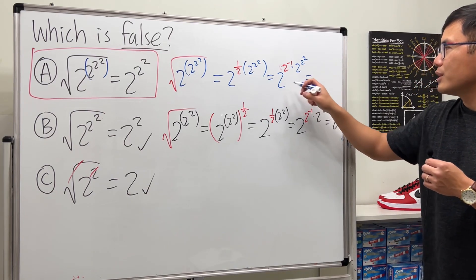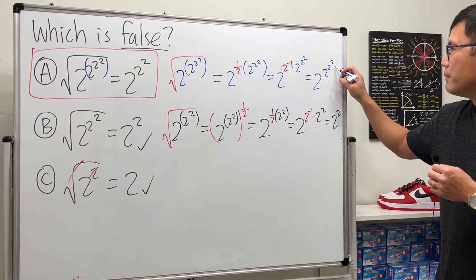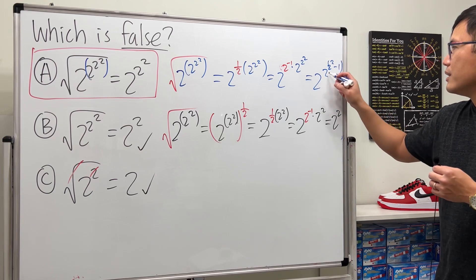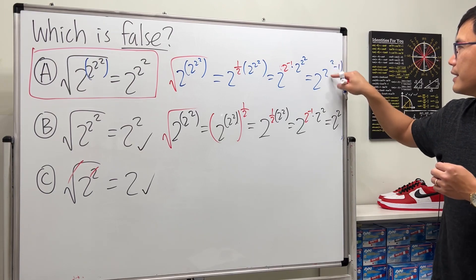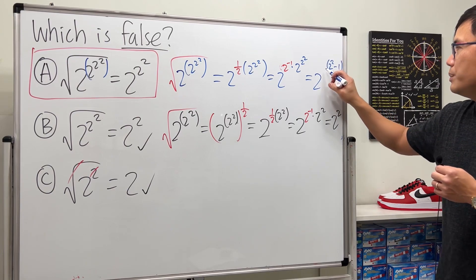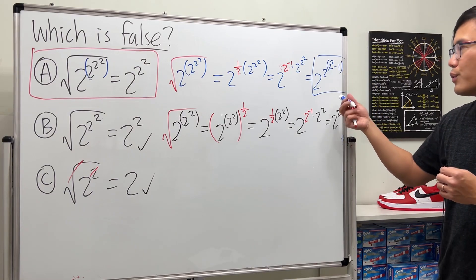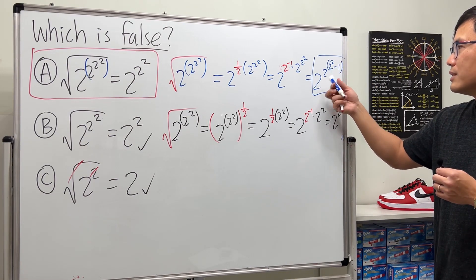If you want to write everything in power form, that would be it. But yeah, so that would be the correction. Of course, if you work it out, 2^3 is 8, so this is 2 to the eighth power.